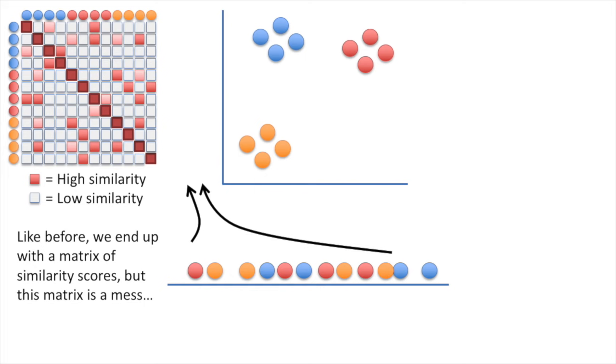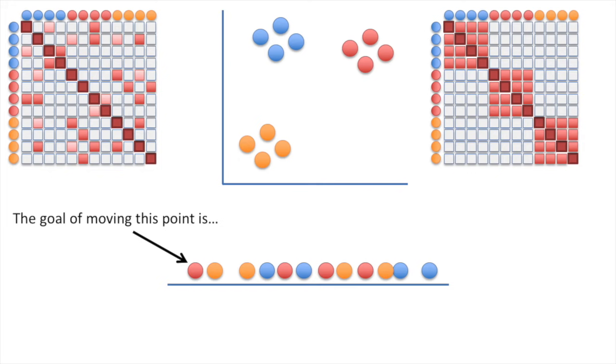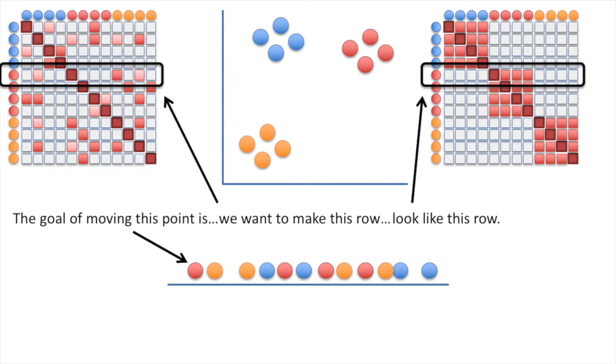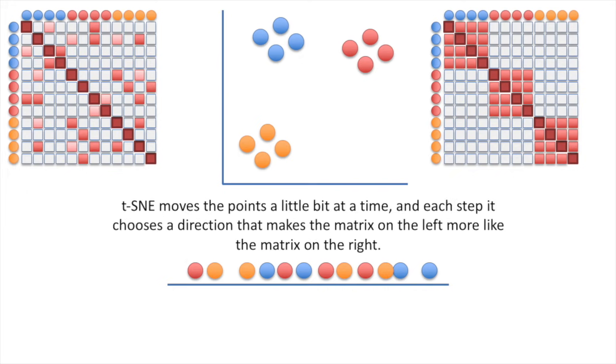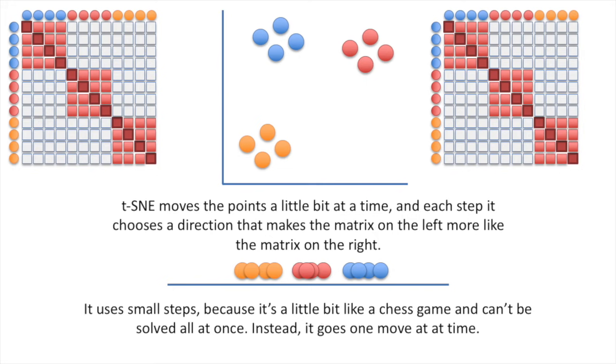Like before, we end up with a matrix of similarity scores, but this matrix is a mess compared to the original matrix. The goal of moving this point is, we want to make this row look like this row. t-SNE moves the points a little bit at a time, and at each step, it chooses a direction that makes the matrix on the left more like the matrix on the right. It uses small steps, because it's a little bit like a chess game and can't be solved all at once. Instead, it goes one move at a time. BAM!